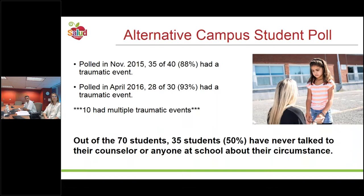Dr. Hendershot suggested I pull my students from the alternative school and survey them. I monitored the bus before and after school — sure enough, 30 out of 88 had a traumatic event in the fall, and 93% had by spring. The shift from 'why are you not coming to school?' to 'what's going on?' was key. Out of 70 students, 35 had never talked to their counselor or anyone at school about their circumstances. For example, one student's father passed away in fifth grade and he had never spoken to anyone about it, and had no father figure to mentor him.